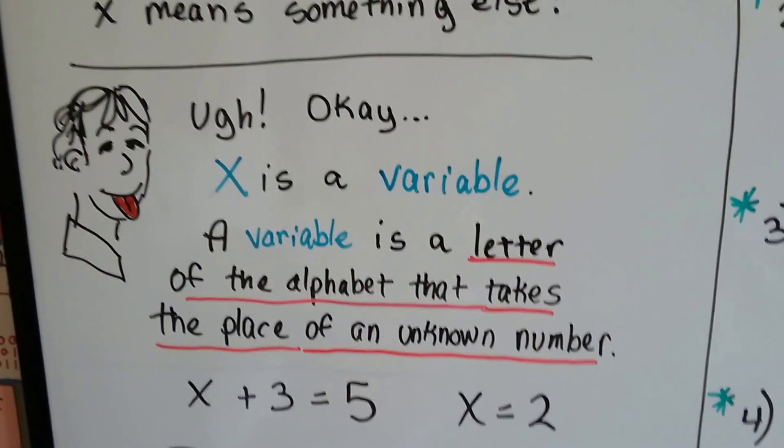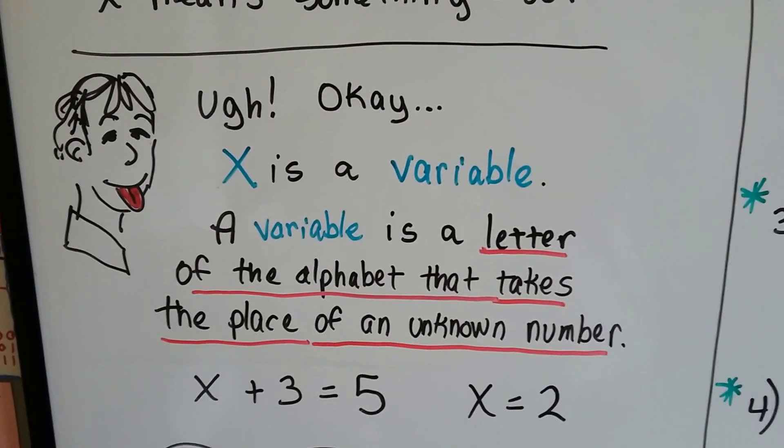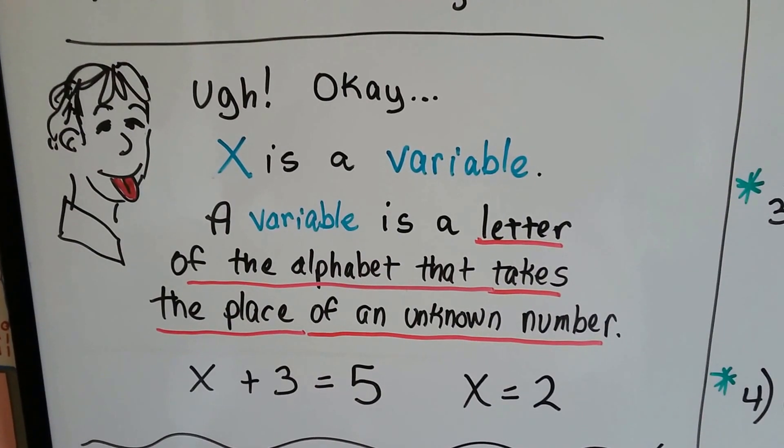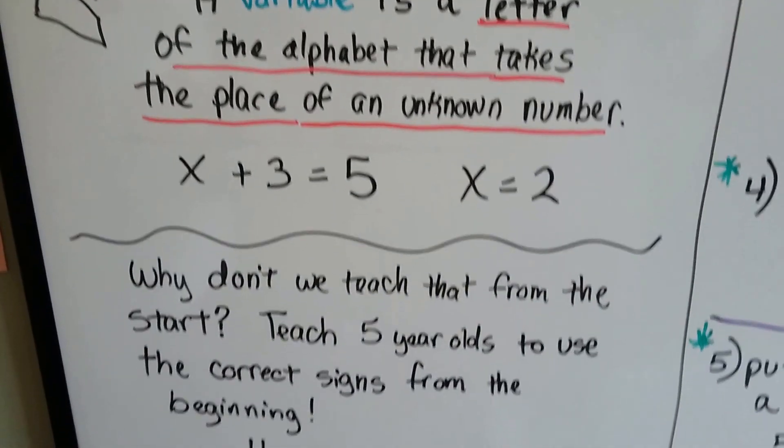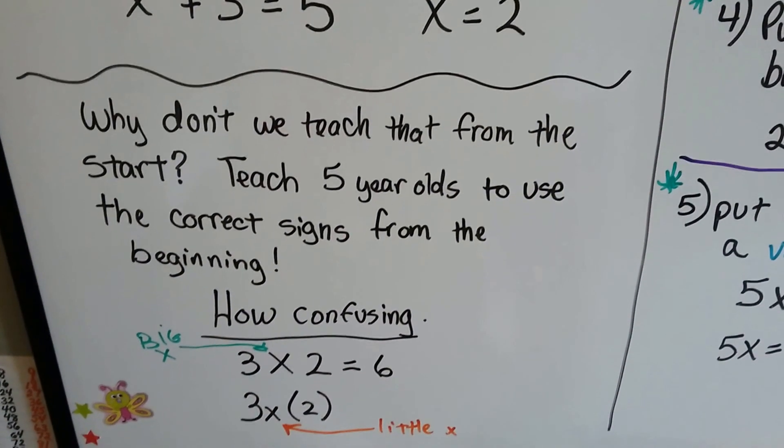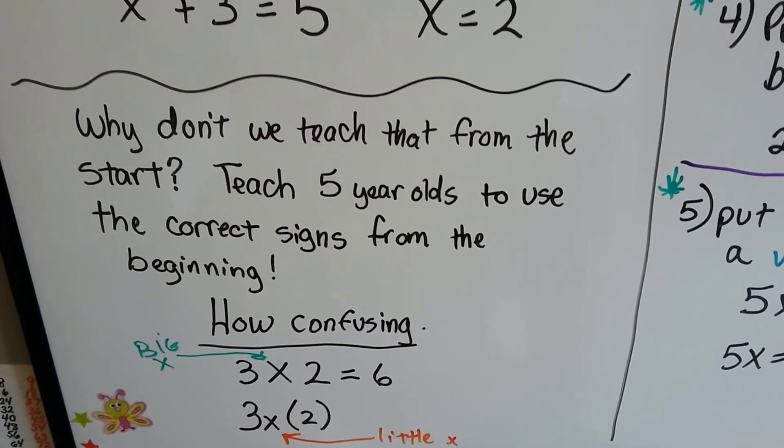Alright, x is a variable, and a variable is a letter of the alphabet that takes the place of an unknown number. x plus 3 equals 5, and x equals 2. Well, why don't we teach that from the start? We should teach five-year-olds to use the correct signs from the beginning, and it's really confusing.